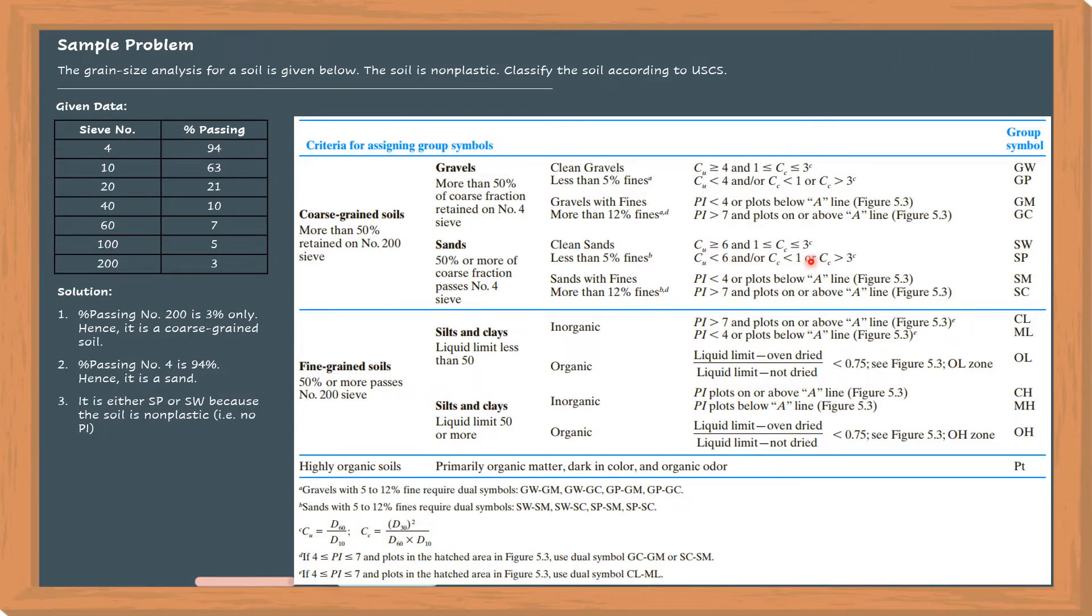Let's proceed. Soil is classified as SP. Why? Because as mentioned earlier, the percent passing number 200, or the percent of fines, is only 3%, or less than 5%. So it's SP. This criterion that C sub U must be less than 6 is just confirmation. You may plot the particle size distribution curve in a semilog graph and find the value of C sub C. You can confirm that the ratio of D60 and D10 is less than 6, confirming the classification as SP.